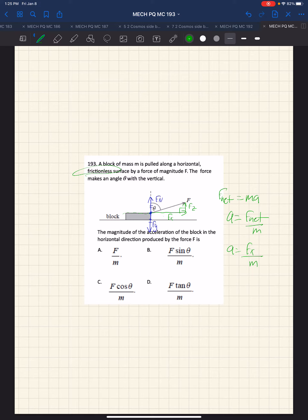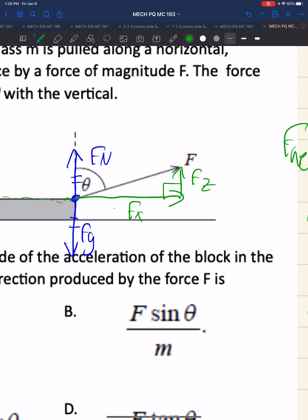The magnitude has Fx as a component, so it's not just F over m. So that allows us to take that one out right away. That doesn't improve our odds very much from 0.33 to 0.25 to guess from there. So now we want to do some geometric work here.